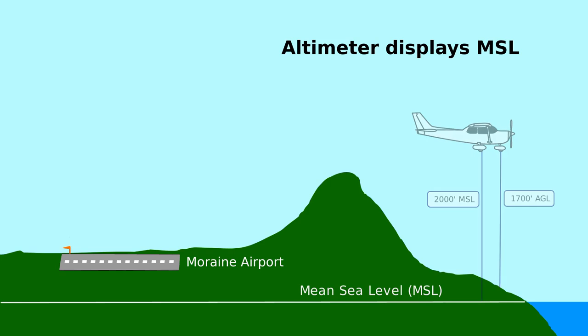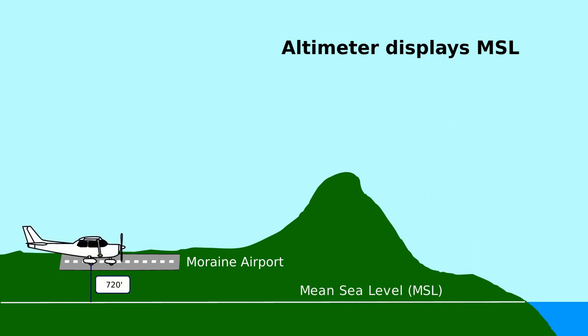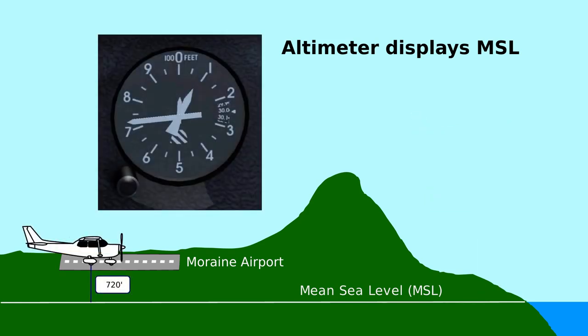At Moraine, for example, the field elevation is 720. So our altimeter reads 720 when we're sitting on the runway.